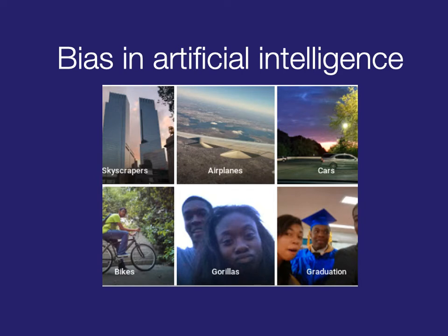However, artificial intelligence and the machine learning algorithms that run these image recognitions are biased. This is Google Photos — a person uploaded a selfie of herself and a friend, which, like your phone probably does, sorts images into different categories. You can see it correctly sorted many of her images — cars, a graduation ceremony, a bike — but it classified the image of this young woman as a gorilla.